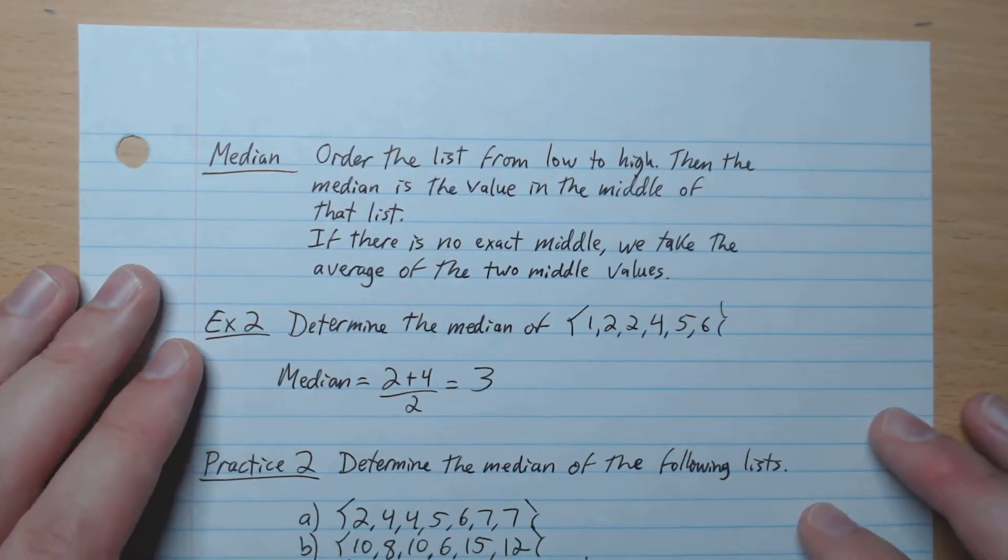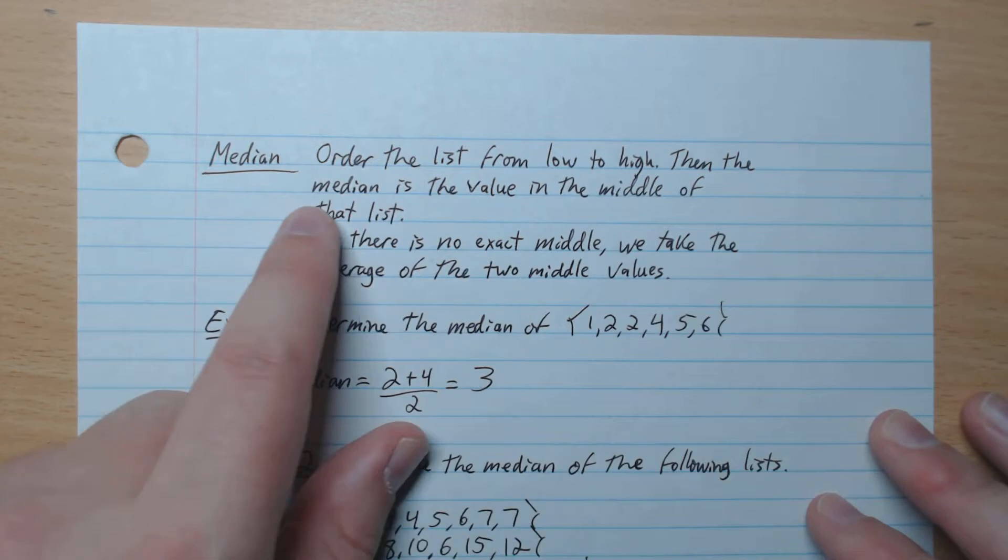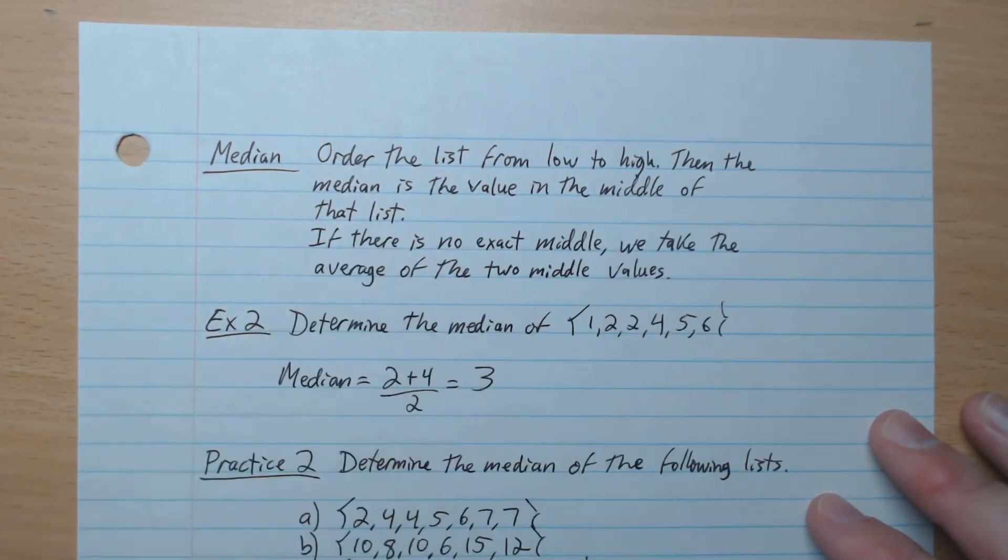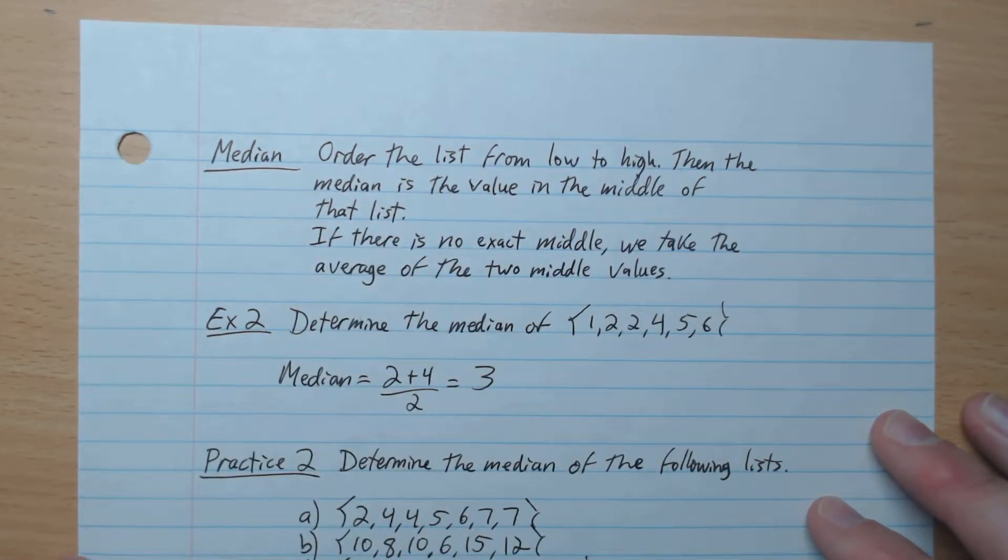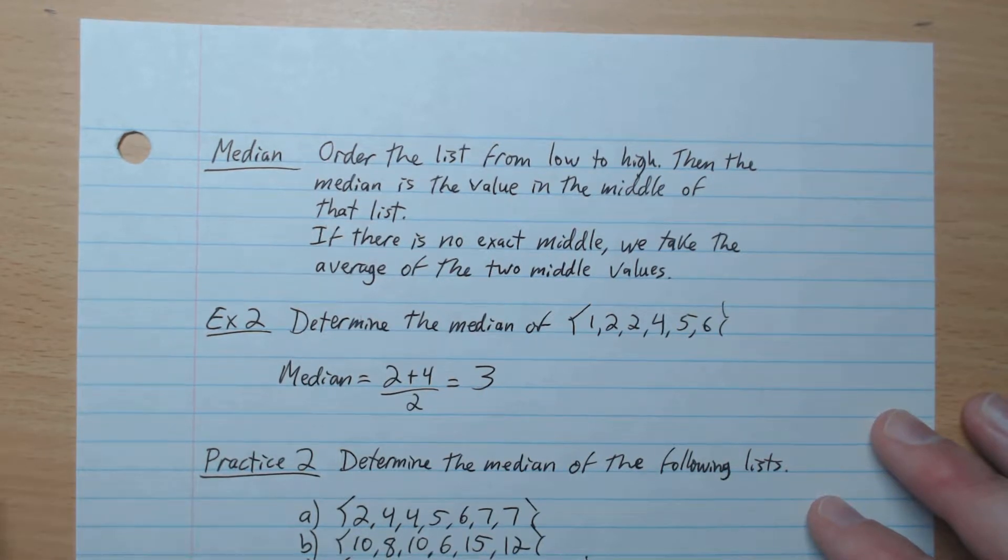Median. So what we're going to do is you order the list from low to high. Then the median is the value in the middle of that list. If there's no exact value, we take the average of the two middle values.